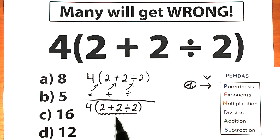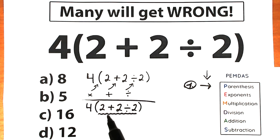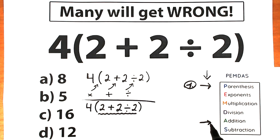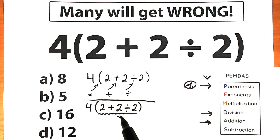Inside the parenthesis we have a complicated expression with addition and division. We need to know what to do first — divide or add. This is a really important moment because a lot of students forget about order of operations inside the parenthesis and add first, which is a bad mistake. We have addition and division here, and division has the higher priority than addition because it has the higher position in PEMDAS.